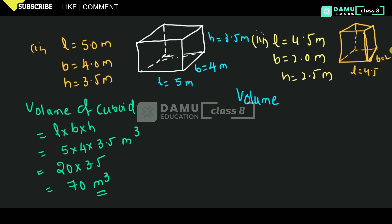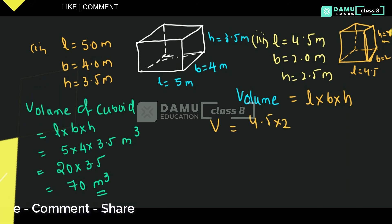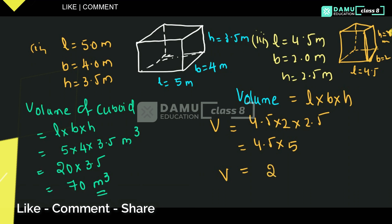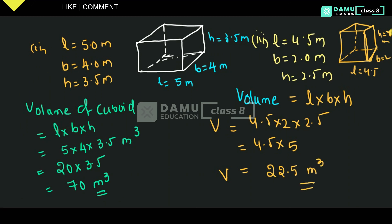So the volume equals length into breadth into height: 4.5 into 2 into 2.5. Now 2 into 2.5 is 5, so the volume is 4.5 into 5, which gives 22.5 meter cube. Therefore, volume is equal to 22.5 cubic meters.